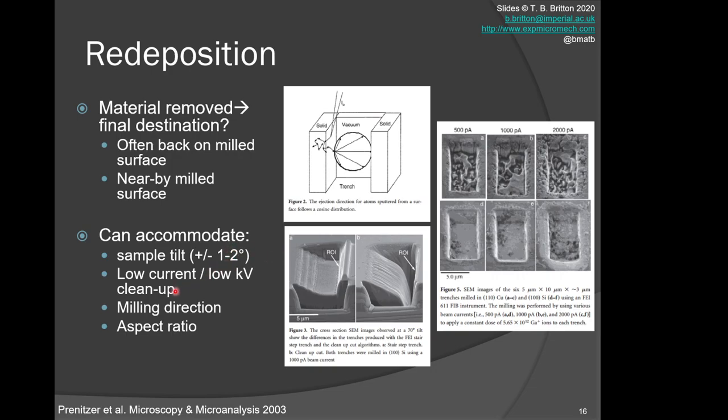We can control the tilt of the final tilt to back-tilt slightly by one or two degrees to get a near-parallel surface. We can use low currents and low kV final cleanup. We can control the milling direction, so as we cut, we can cut off to the right and bring it so we get closer to the fresh surface being the last thing that we mill, so we reject the material sideways. We can control the aspect ratio, the depth-to-width ratio, to reduce the impact of that redeposition.